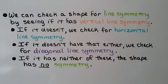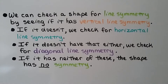We can check a shape for line symmetry by first checking for vertical line symmetry. If it doesn't have that, we check for horizontal line symmetry. If it doesn't have that either, we check for diagonal line symmetry. And if it has none of these, the shape has no symmetry.